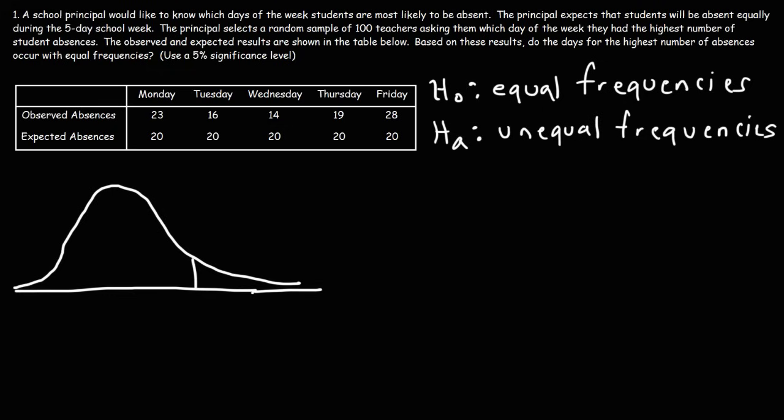This value here is known as the critical value, or rather, the critical chi-square value. It separates the rejection region from the do-not-reject region. So this is the rejection region. I'm going to write RR to represent that. And the area shaded to the right of the critical value is going to be alpha, which in this case is 0.05.